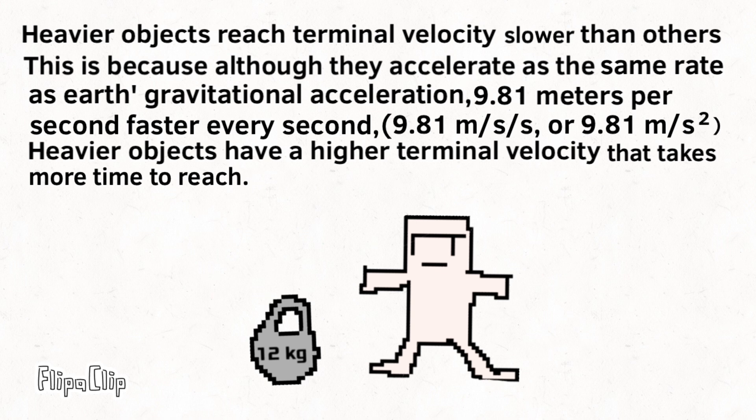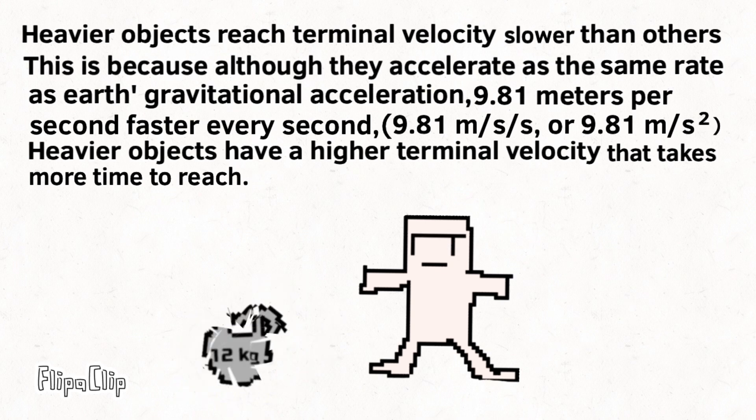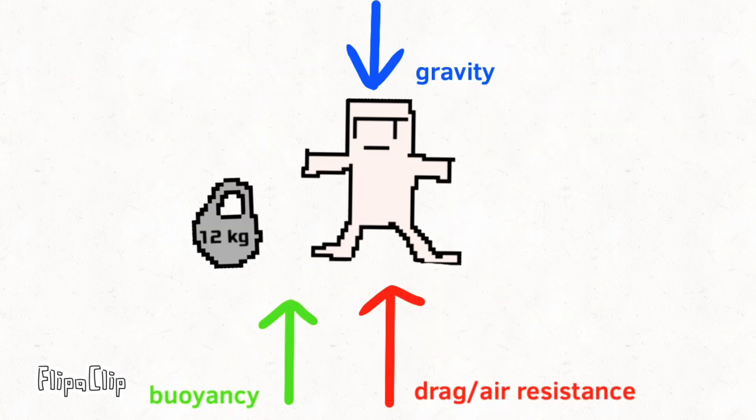heavier objects have a higher terminal velocity that takes more time to reach, as they are approaching a higher terminal velocity at the same rate as an object with a lower terminal velocity.